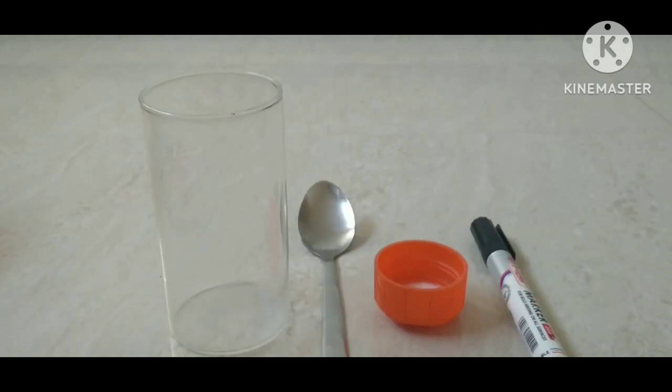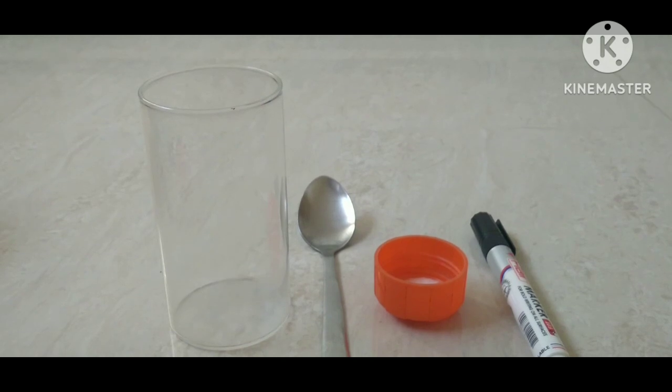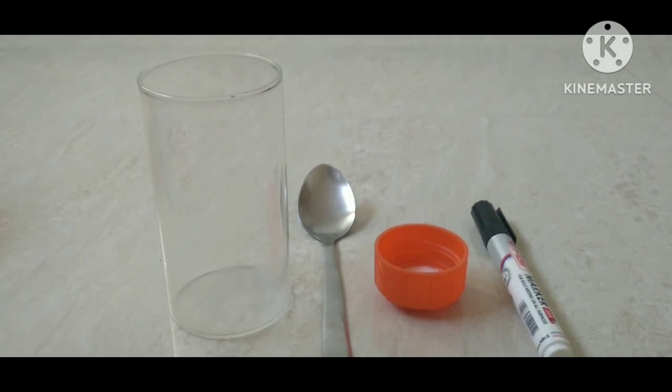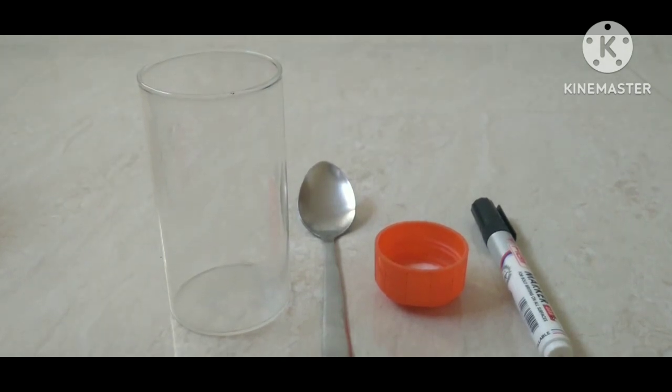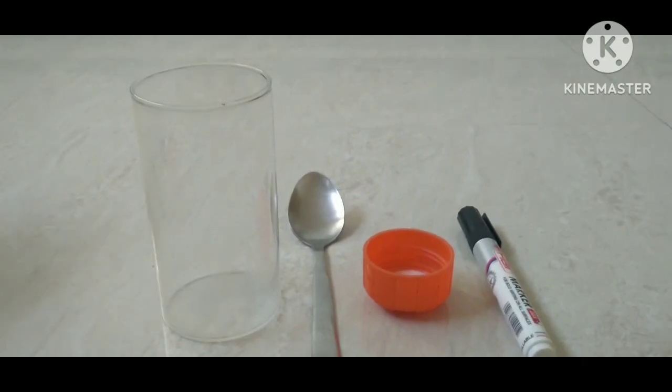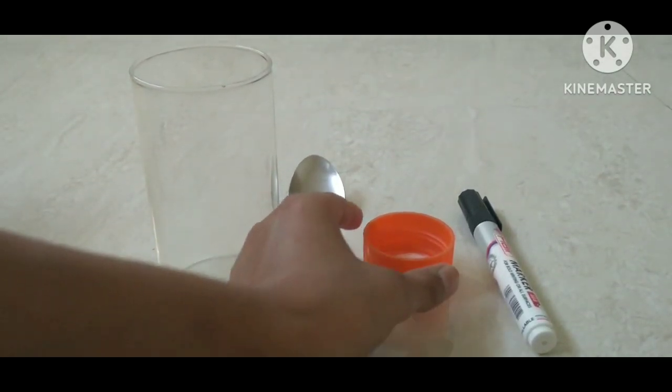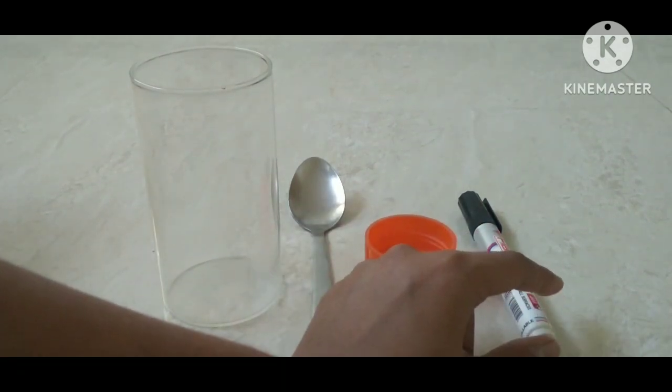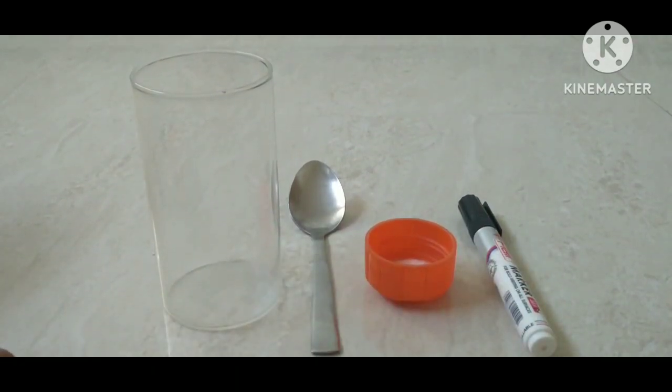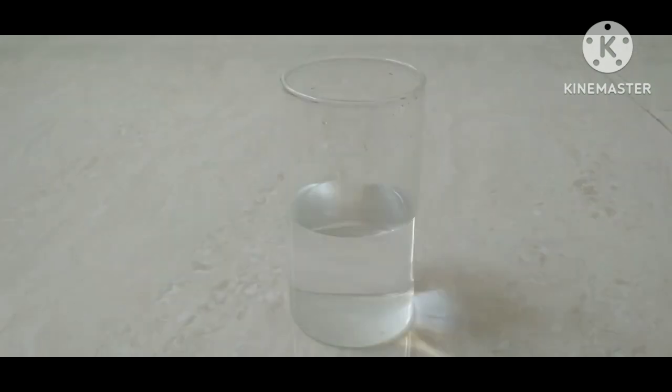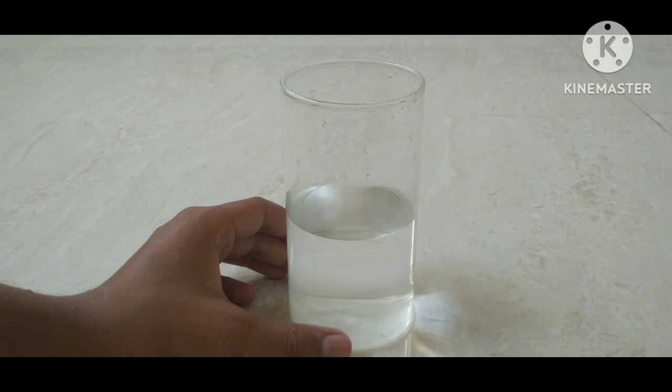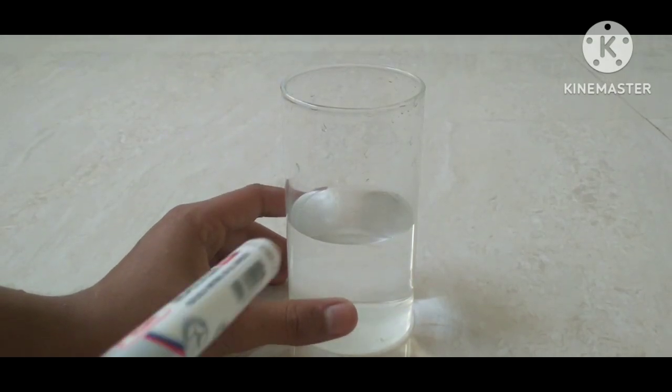Hello, today I am here to demonstrate that matter is made up of particles. Materials required are a glass tumbler, spoon, salt, and a marker. Let's start our activity. I have taken some water in this tumbler.